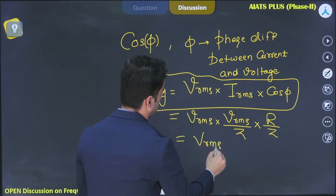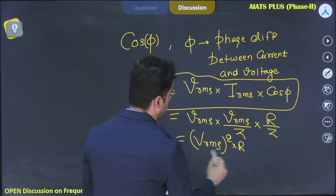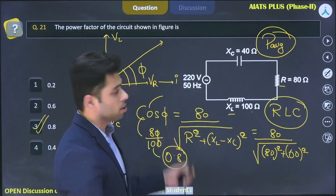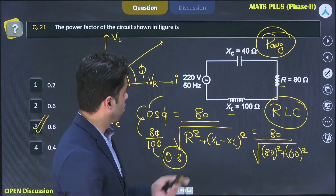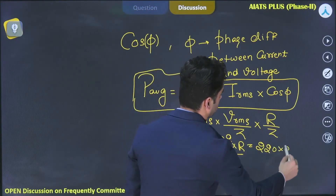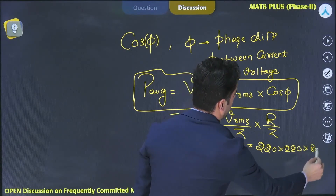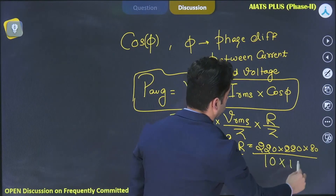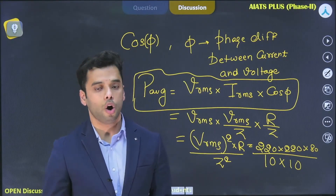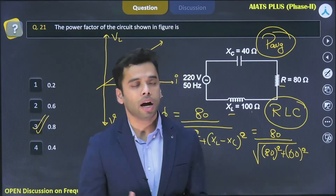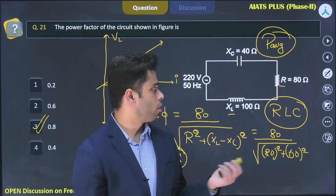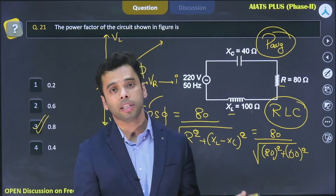So P_average = Vrms² × R / Z². Vrms is 220, R is 80, and Z is 100. This gives P_average = 220 × 220 × 80 / (100 × 100). That's how you calculate the power factor and, once you have it, the average power dissipated in the RLC circuit.